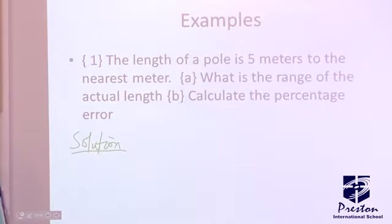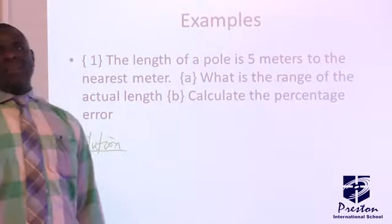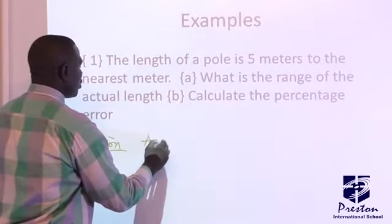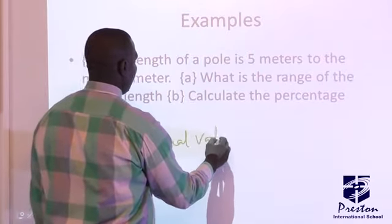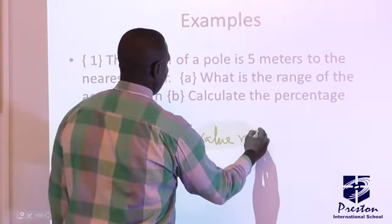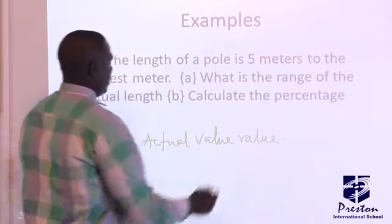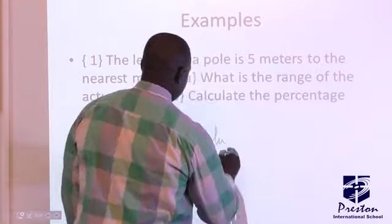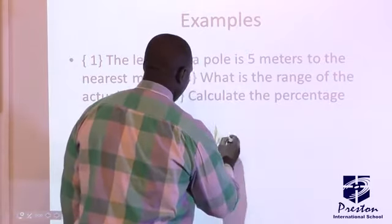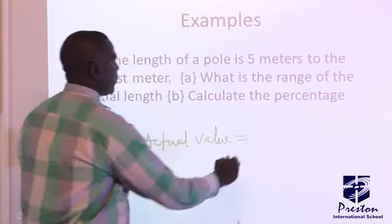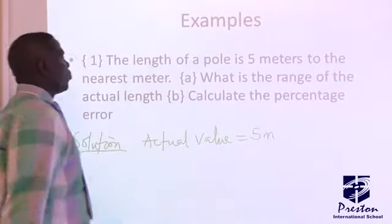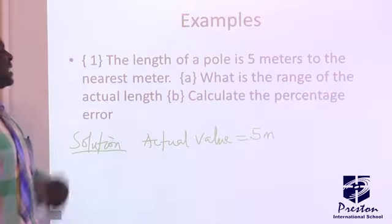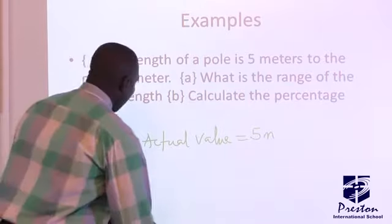Now, since the measurement is to the nearest meter, this 5 meters is standing at the actual value. The actual value is 5 meters. So, the error that you have in this to the nearest meter, you can have, instead of you measure less...